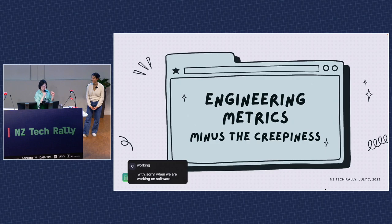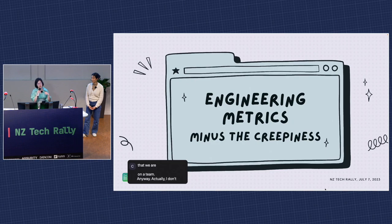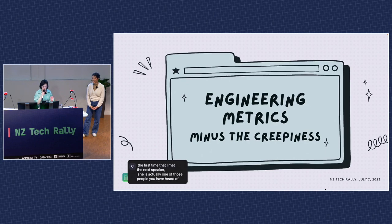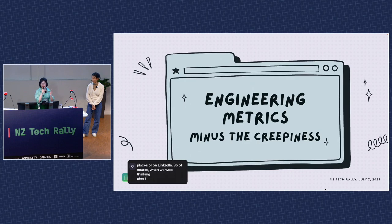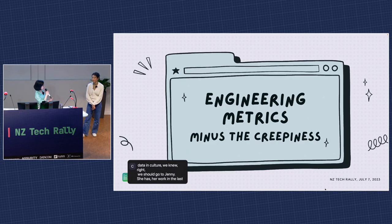I don't recall the first time that I met the next speaker. She's one of those people whose name you've seen everywhere — in articles, behind a commit, or on LinkedIn. When we were thinking about data, metrics and culture, we knew who to go to. It's Jenny. Her work in the last few years has been very focused on making sure that metrics, data, and culture intertwine in the best possible way. Please welcome Jenny Sang.